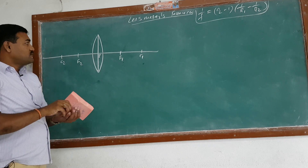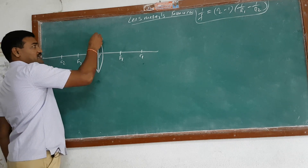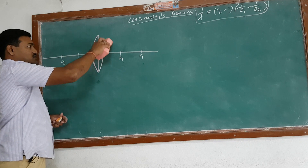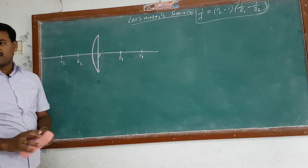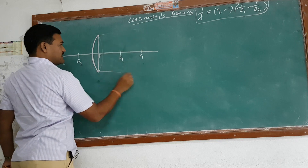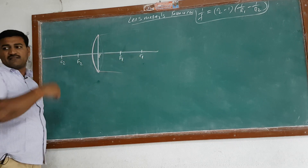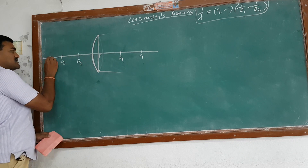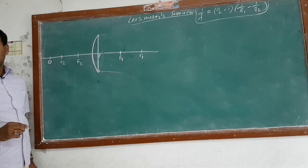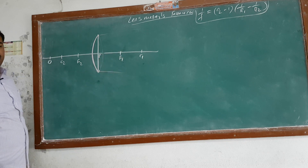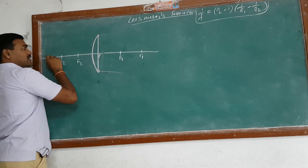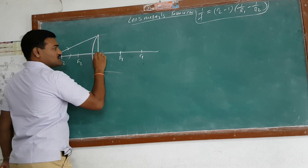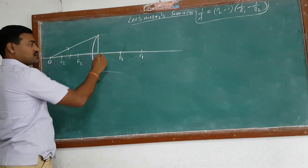Let us imagine we are considering that the medium has only one curved surface — only this first curved surface, with no second curved surface. This means we have a denser medium where the interface is convex-shaped. Now let us imagine there is a point object O on the principal axis. I will draw one incident ray and one incident ray along the principal axis, which will go straight, unrefracted.